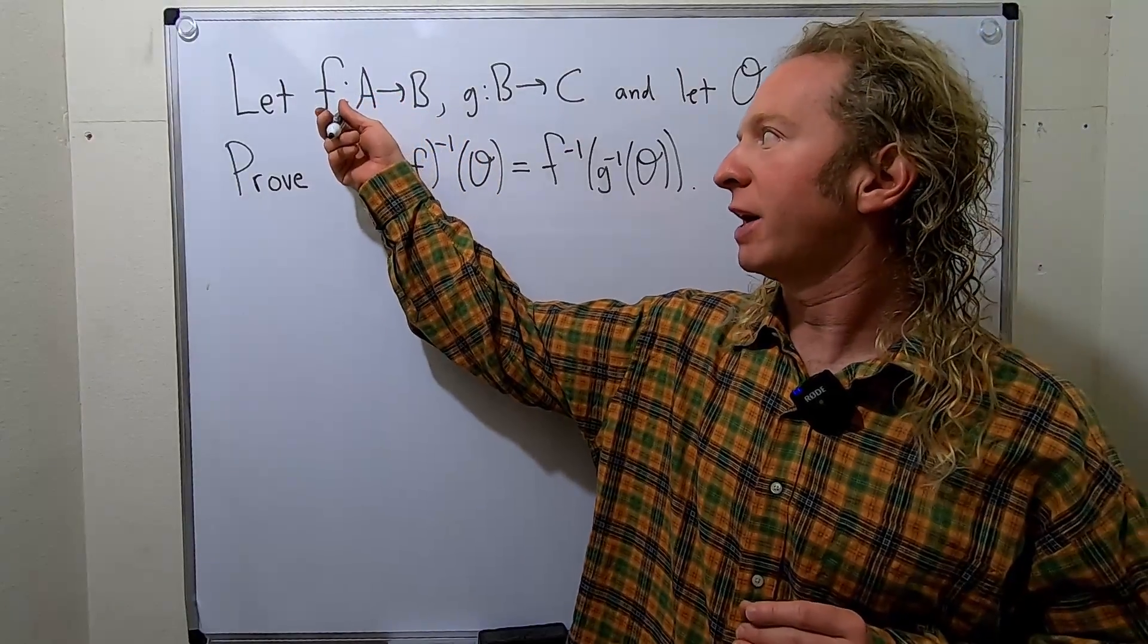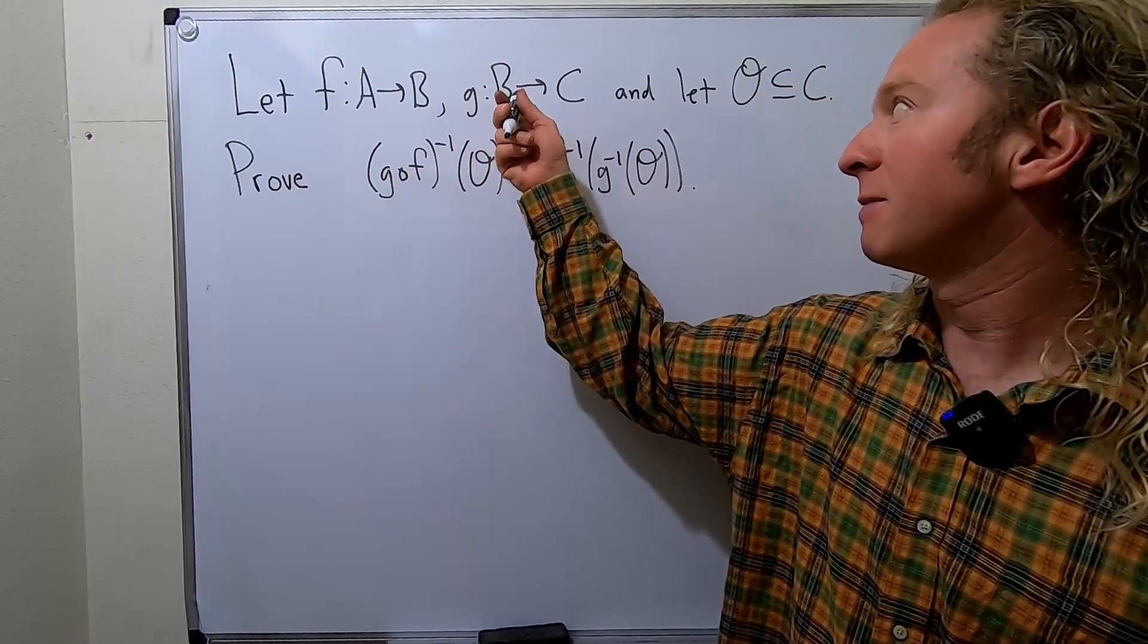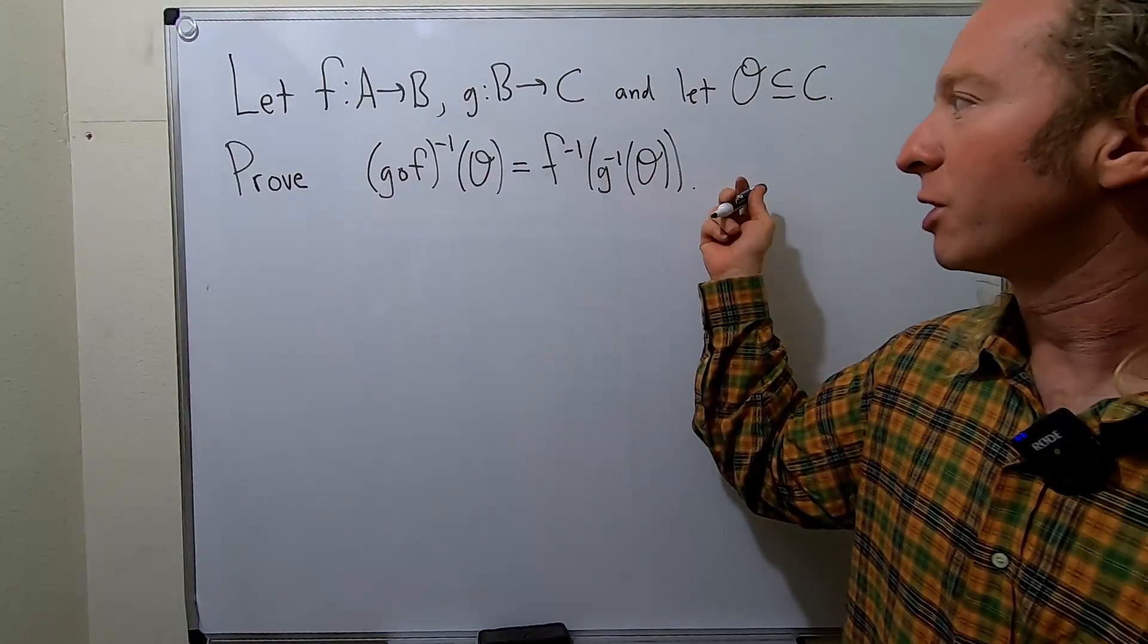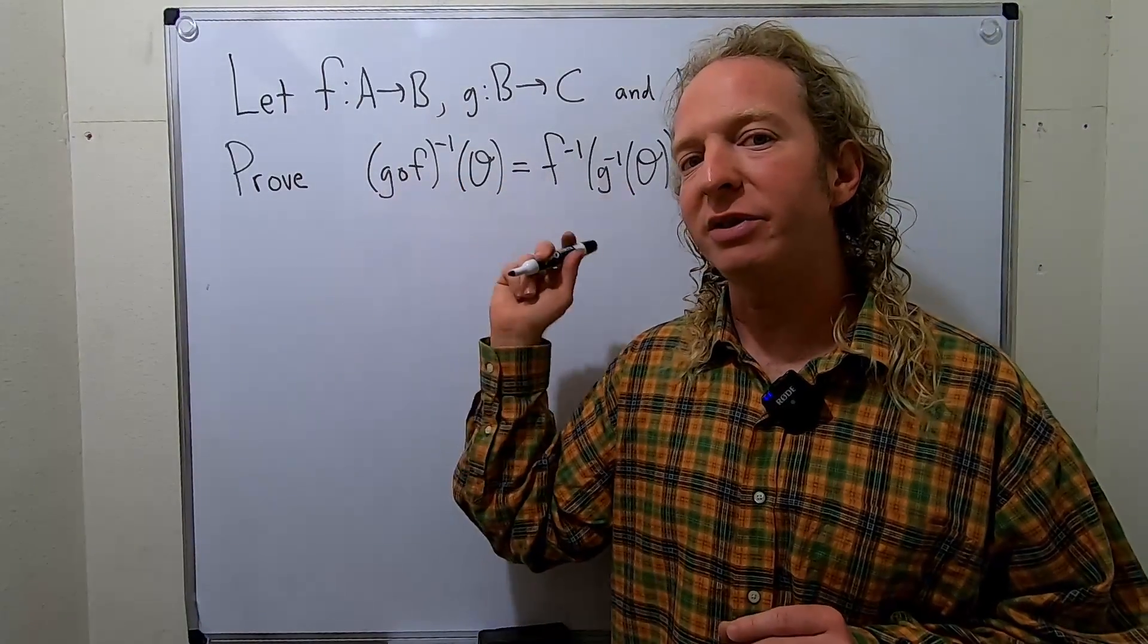So we have two functions, F maps A to B, G maps B to C, and O is a subset of C. And we're going to prove this equality of sets.